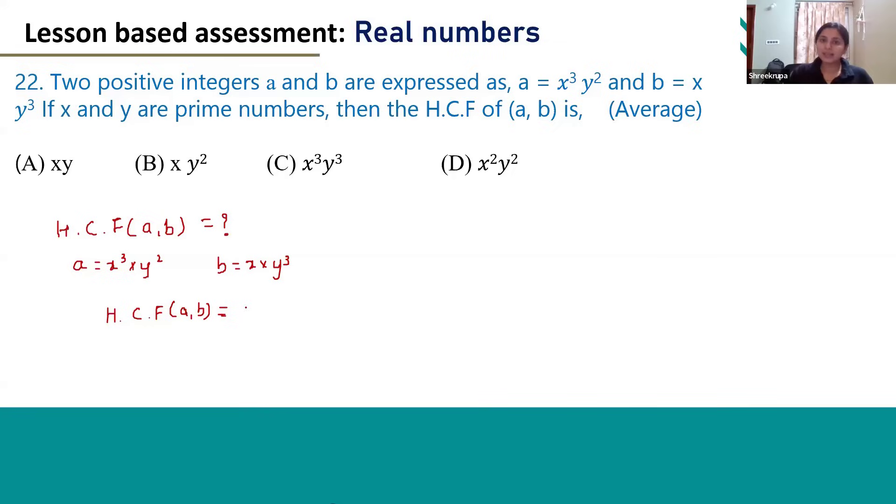So we have to take the least powers of these variables. x¹ is the least power among x³ and x¹.